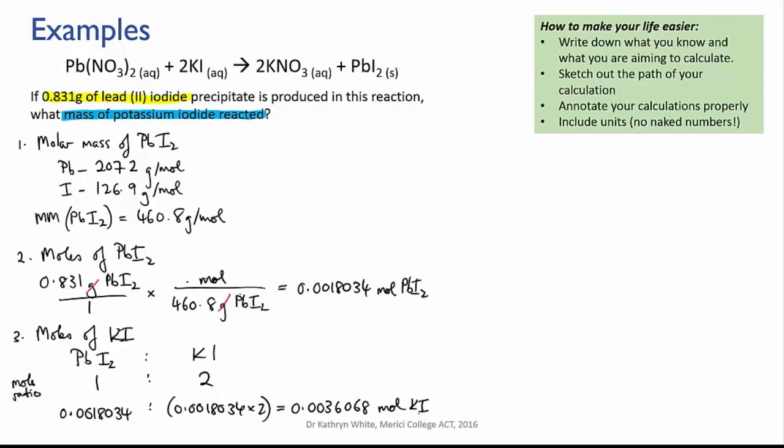Notice also that I'm maintaining plenty of sig figs as I work through the calculation. If you round off during a calculation you can introduce rounding errors that distort your final value. If you don't want to write down all the digits on the calculator just make sure you write down more sig figs than you'll need in your final answer.